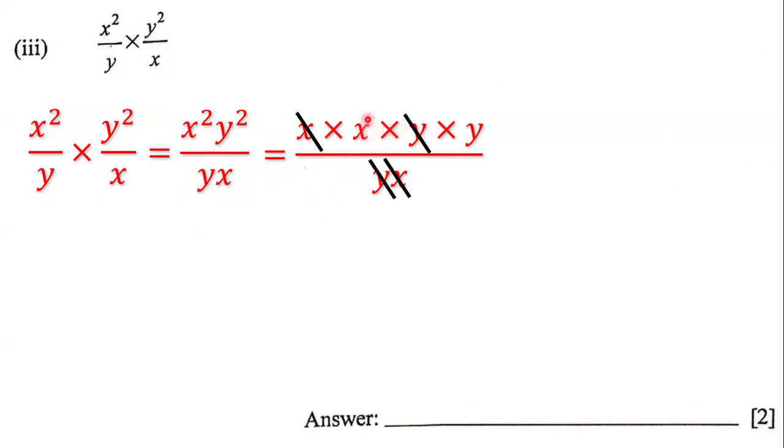And so for the numerator we have x times y, and for the denominator we just have one. We have xy divided by one, which is xy. So our answer to this question is xy.